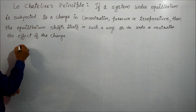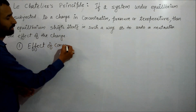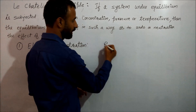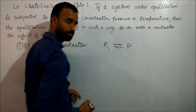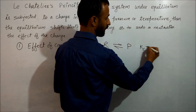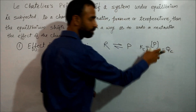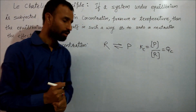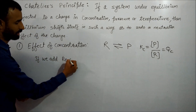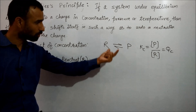Let us first discuss the effect of concentration. Consider a reaction from reactant to product that is in equilibrium, where Kc equals product over reactant, and that equals Qc because the reaction is at equilibrium. Now, if we add reactant, additional reactant is added and equilibrium is disturbed.